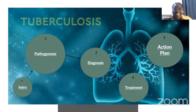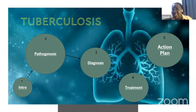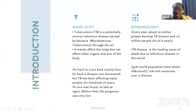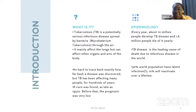We'll be talking about pathogenesis, diagnosis, treatment, and action plan. This month is tuberculosis month, so we have to look at an action plan — it's very necessary for medical professionals to know not just to stay informed but to know what actions we can take. What is tuberculosis? It's a potentially serious infectious disease spread by bacteria called Mycobacterium tuberculosis.